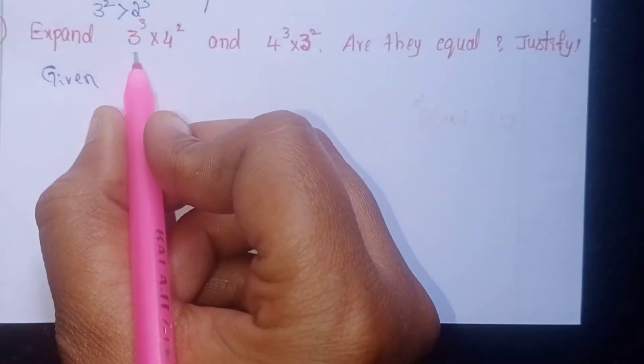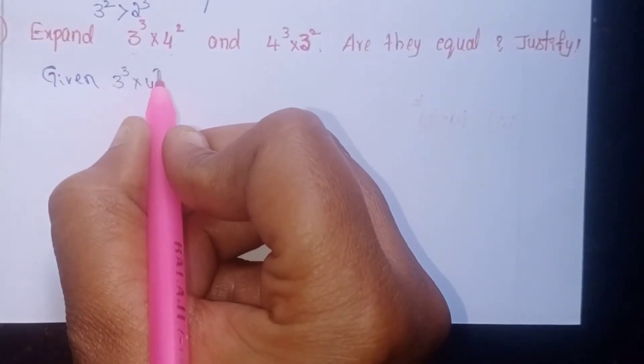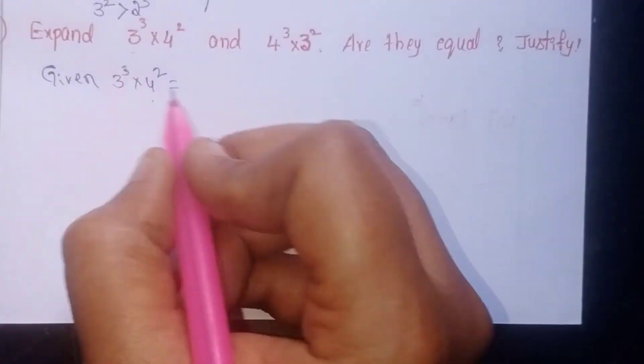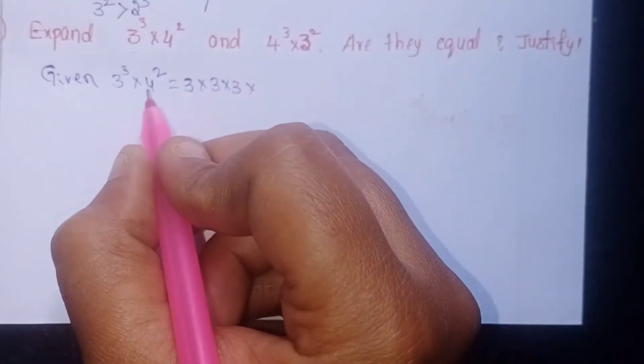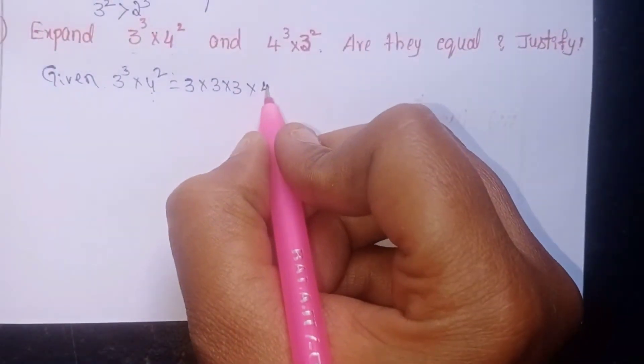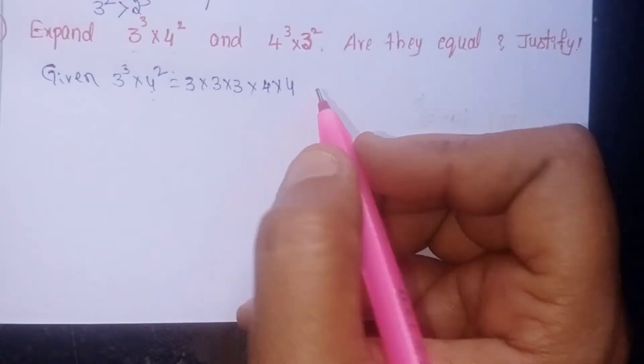First, you expand this one: 3³×4². 3³ means 3 written three times, into 4² which is 4 written two times. Next...